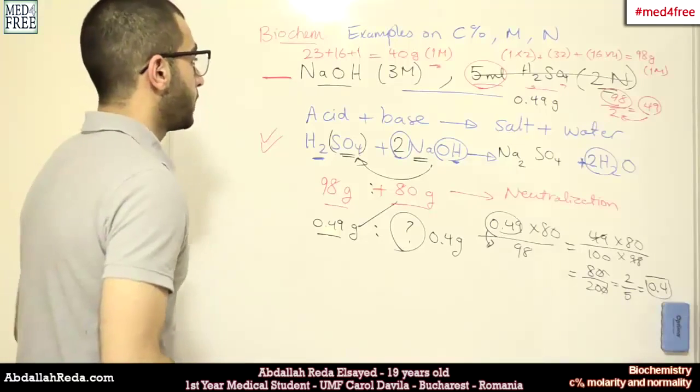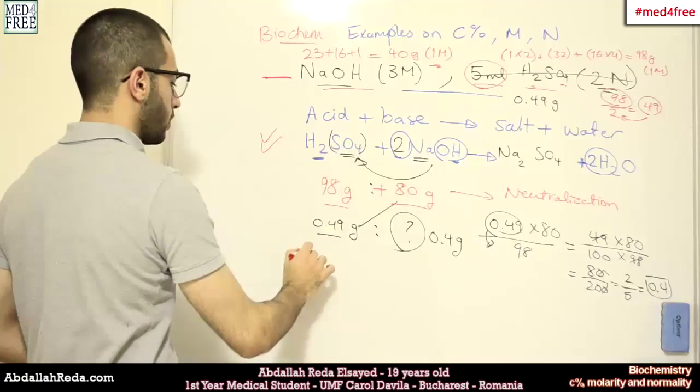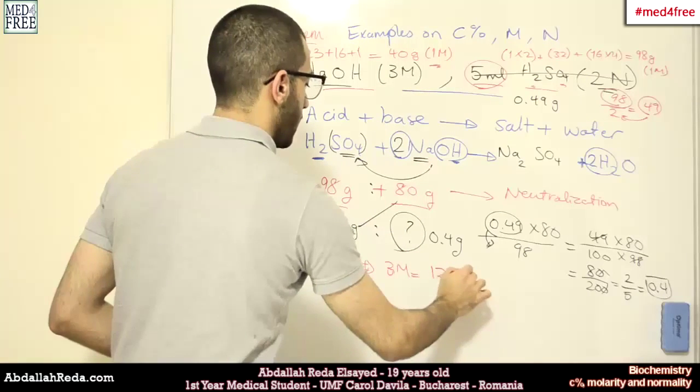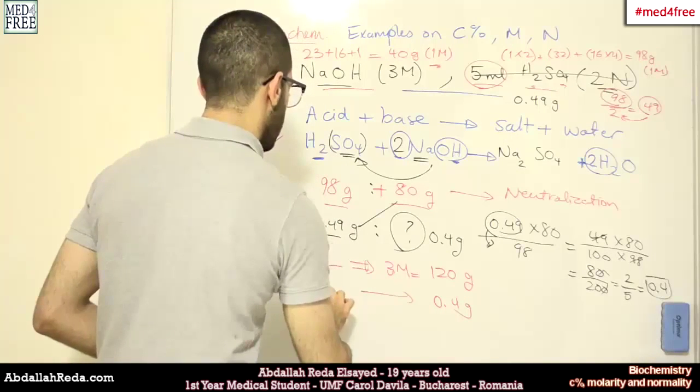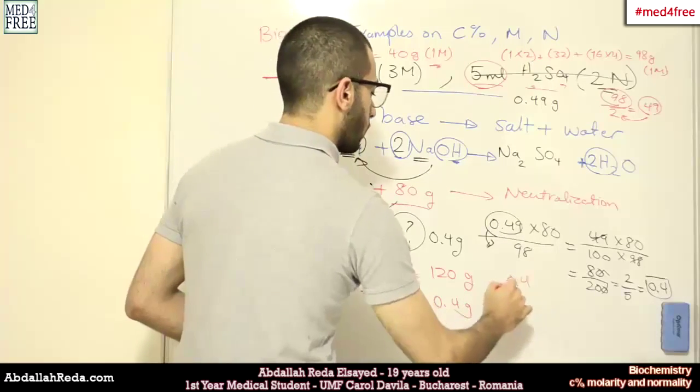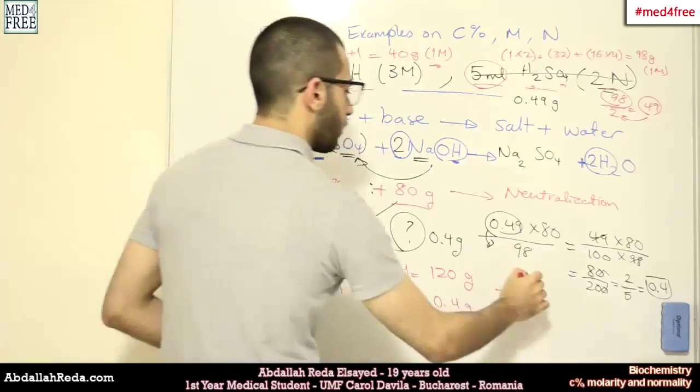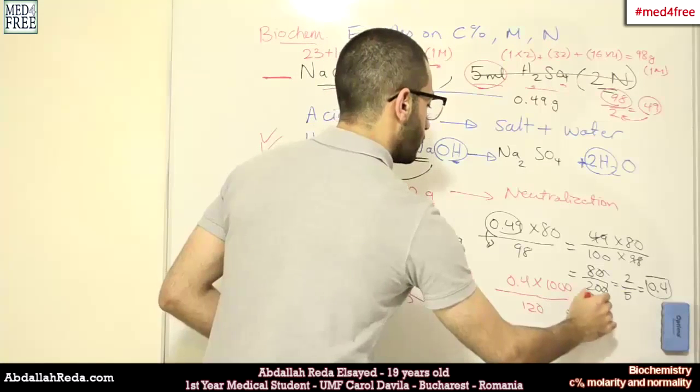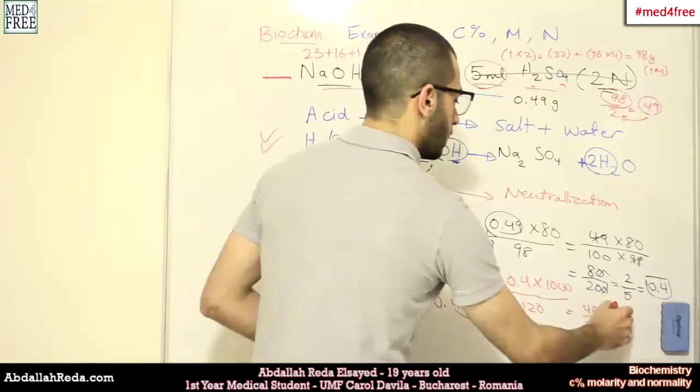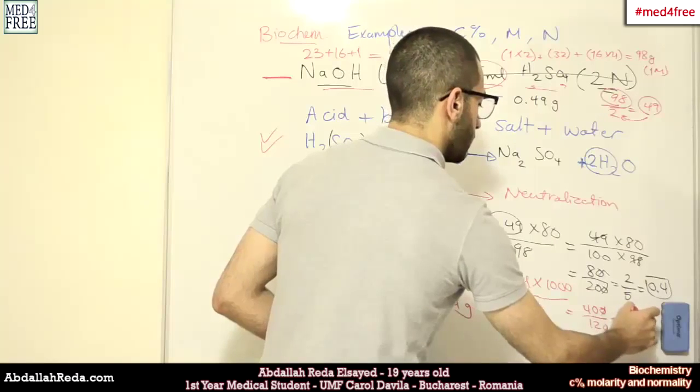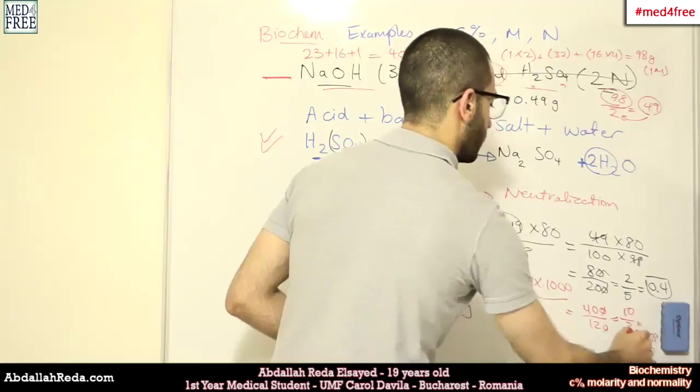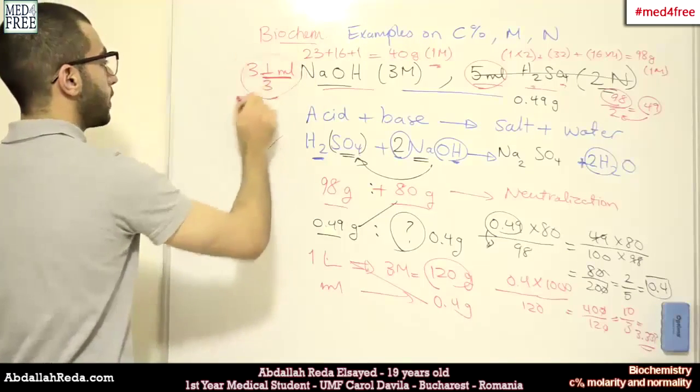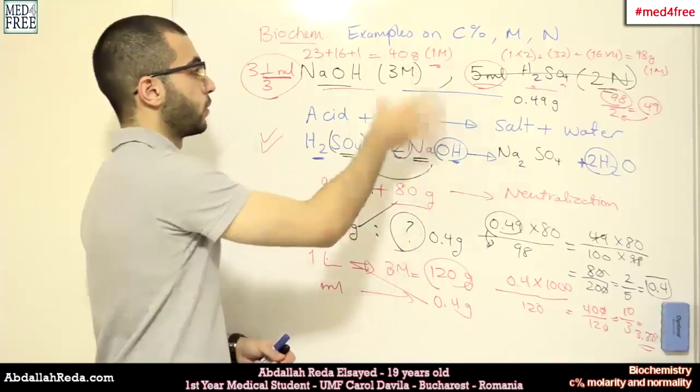Now, for the final step, we have our solution. For 1 liter, it contains 3 moles. And the 3 moles actually equals 120 grams. But we just need 0.4 grams. So how many milliliters do we need? And this would be 0.4 multiplied by 1000 milliliters like this. And then we divide it by 120. This will be 400 divided by 120. So that we finally get 10 over 3, which is 3.333. So finally, we will need 3 and a third of a milliliter in order to react with 5 milliliters in order to make this reaction.